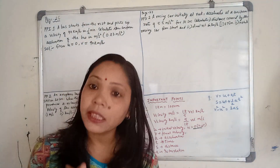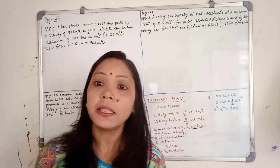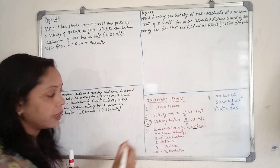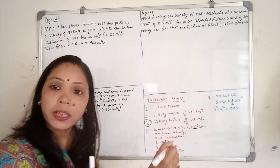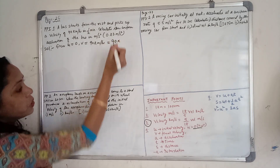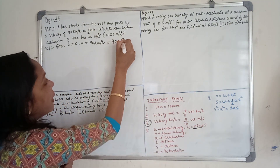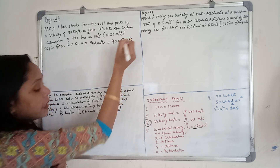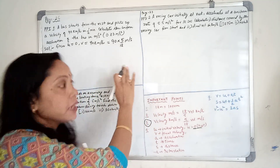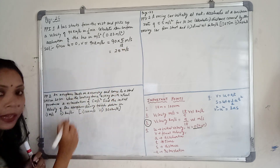We need to convert 90 km/h into meters per second. So, 90 × (5/18) = 25 meters per second. The cancellation you can try yourself.